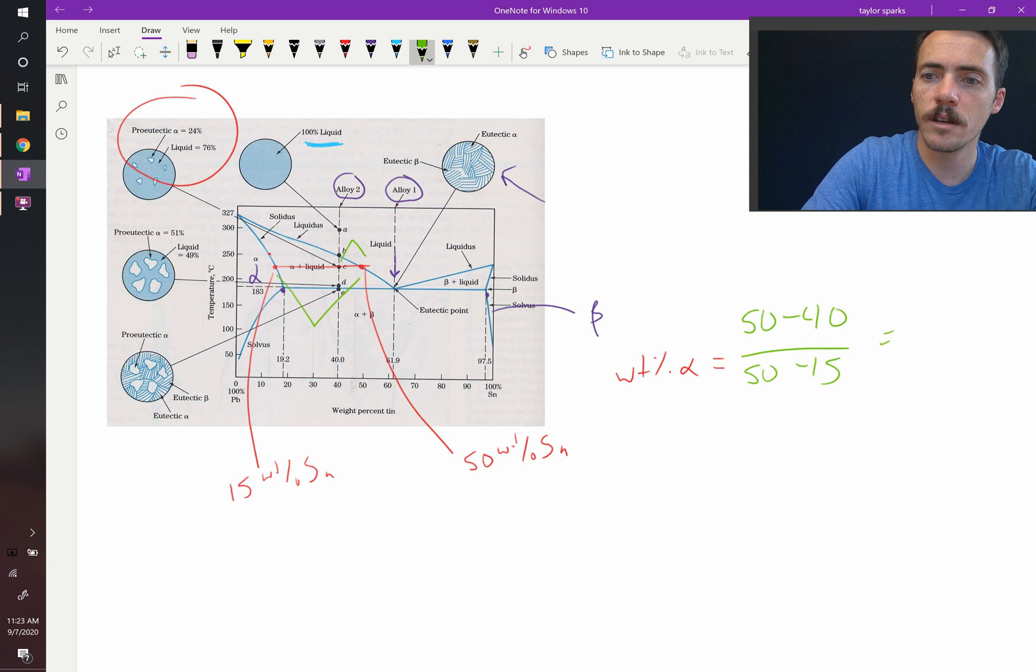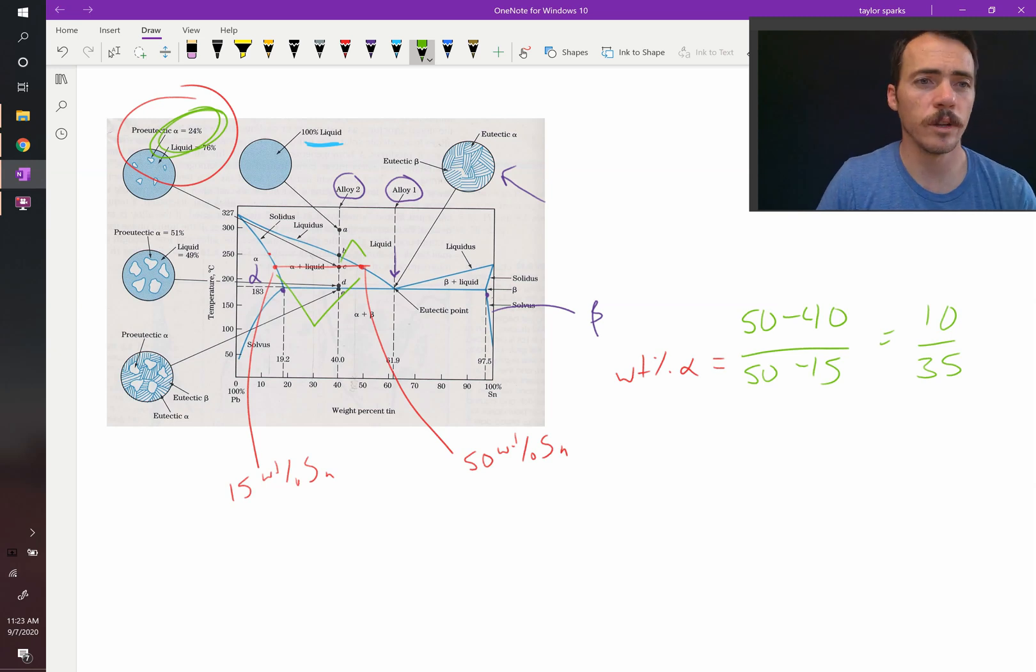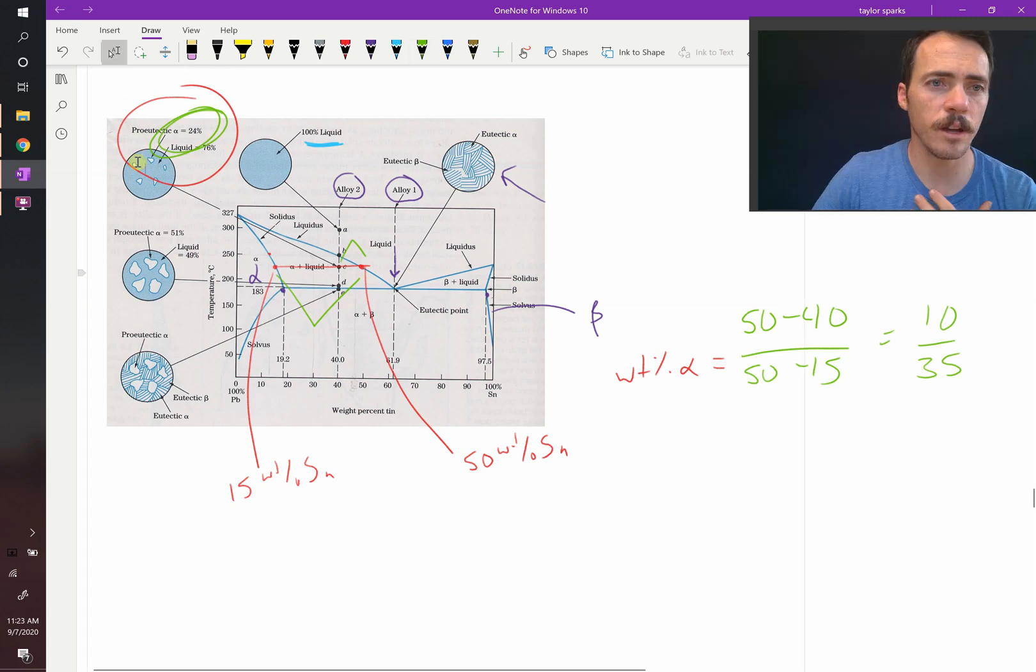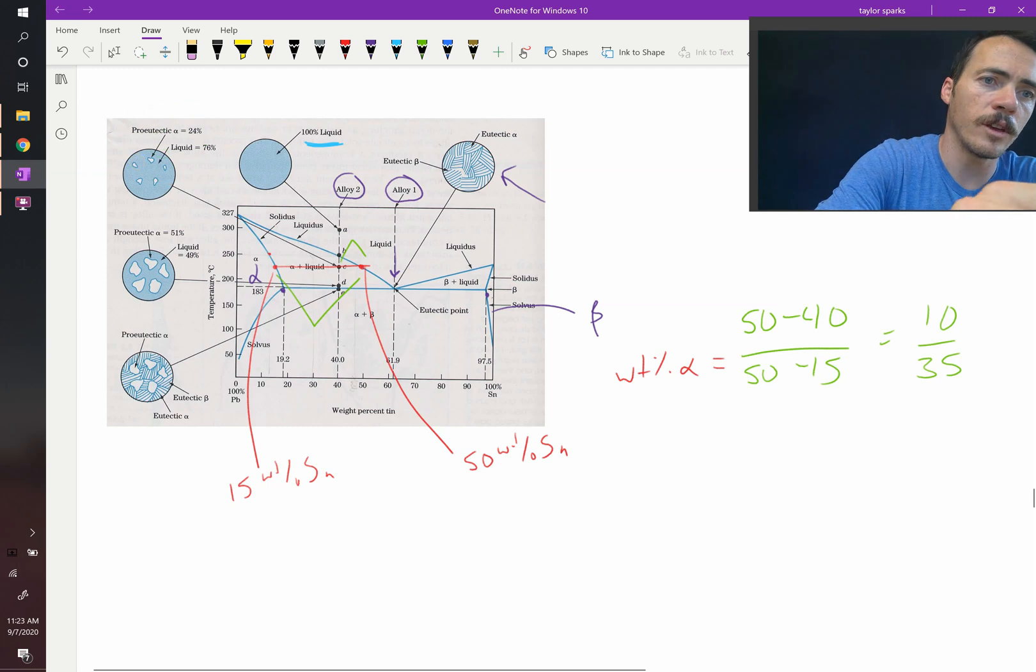So that's 10 over 35. If we punch that into a calculator, we see that it is 28%. So again, we were eyeballing this, but we get about the same thing. They got 24% and we're getting 28%. So that's how you can use the lever rule to sort of sketch these things. You're showing that about 28% of the weight in this is these little globs that are floating.